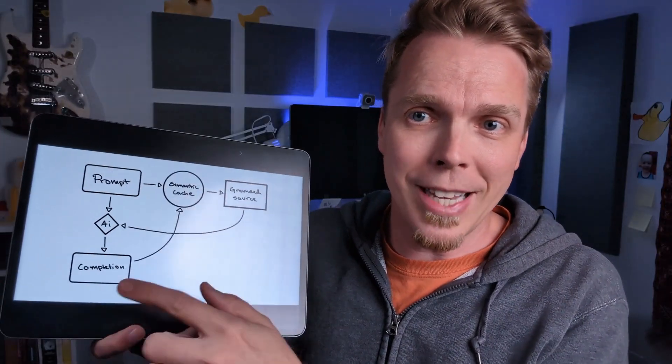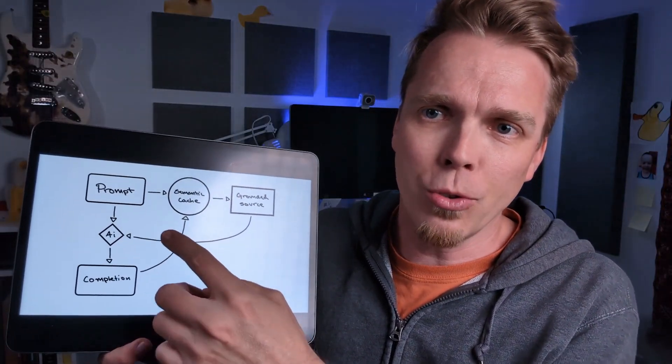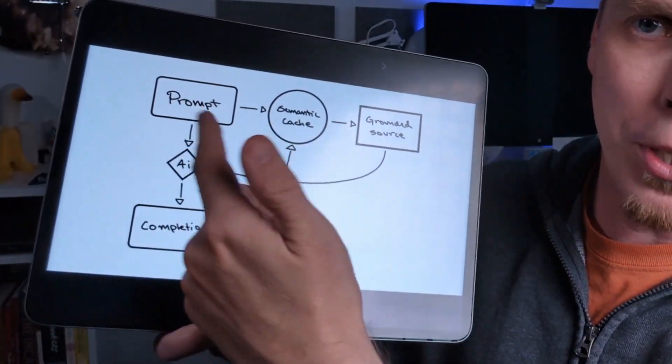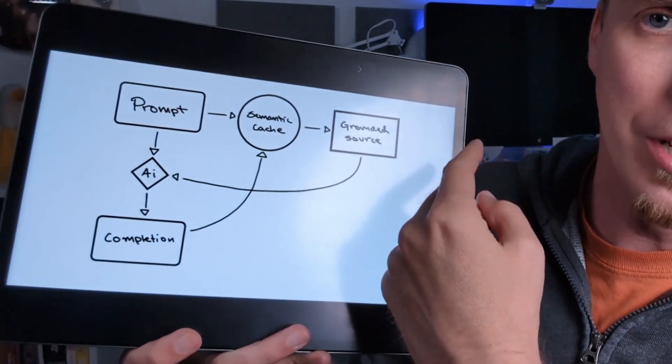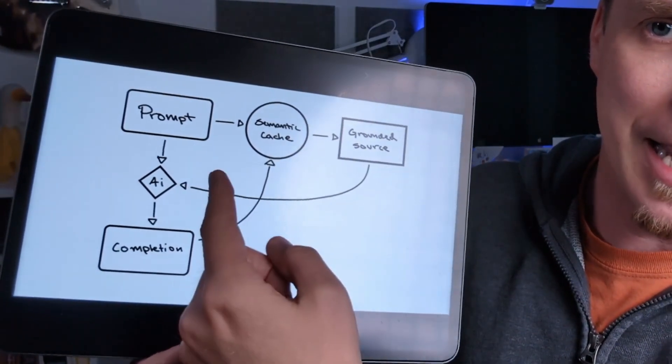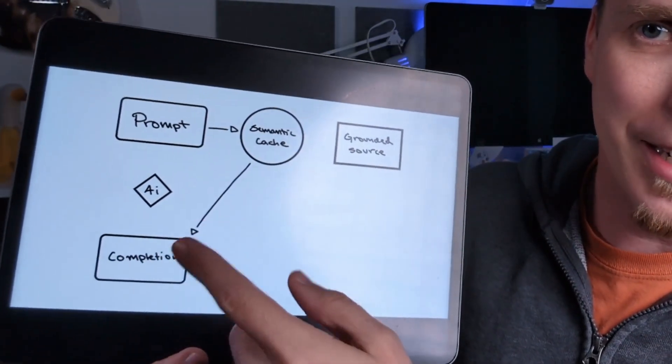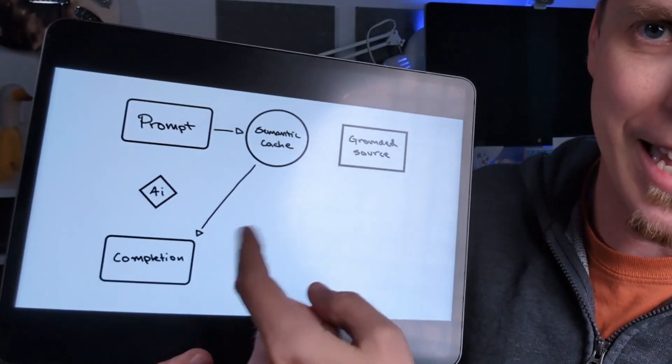And doing this, we can take things one step further and introduce what's called a semantic cache. So that when you put in a prompt, we can go over to the grounded source, get some information, put that back in the AI, and then when the completion comes out, we'll set it into the cache so that next time we can bypass the AI entirely.